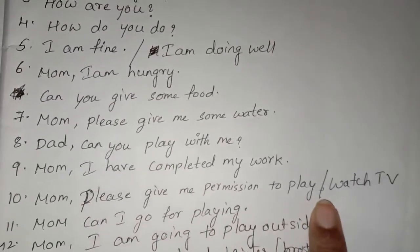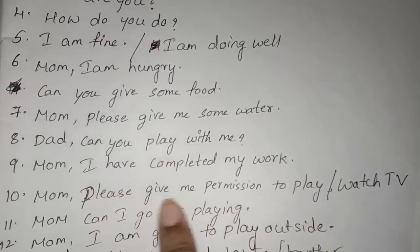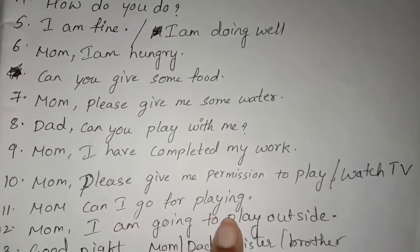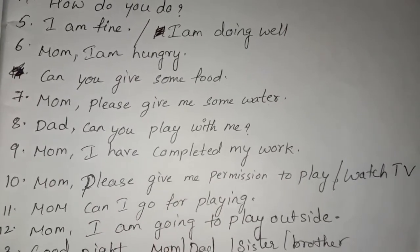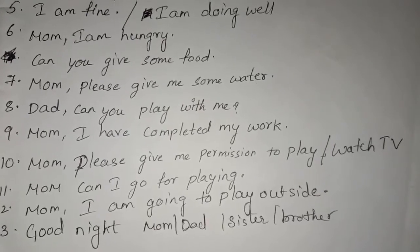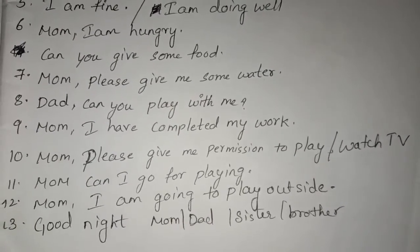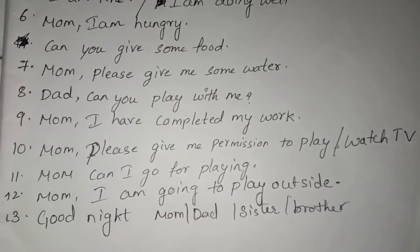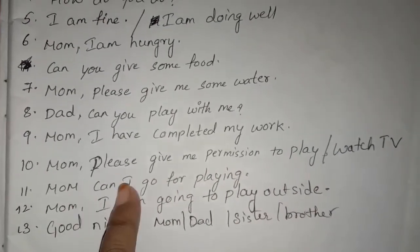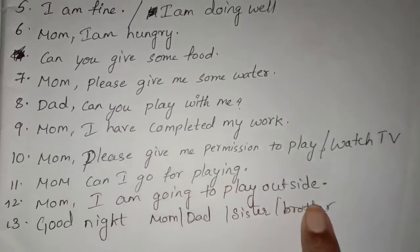Mom, please give me permission to play. Mom, please give me permission to watch TV. When you want permission to watch TV or play, ask in English — your mother will be impressed and give you permission. Mom, can I go for playing? Mom, I am going to play outside. Because from morning to evening, mom will be there — you will be talking with mom daily. Your dad will be going to the office, so use these simple sentences with your mom.